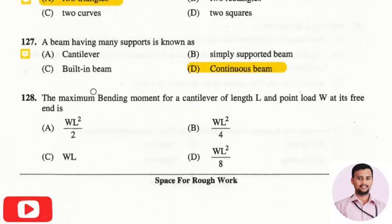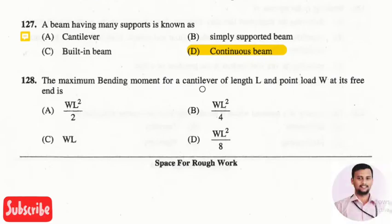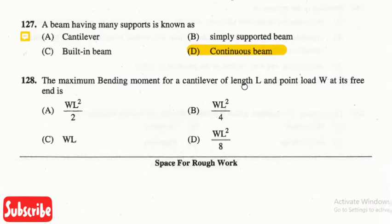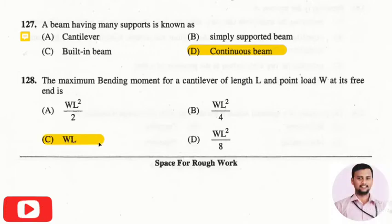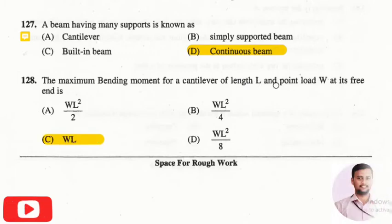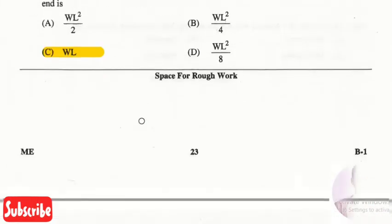The next question is: the maximum bending moment for a cantilever of length L and point load W at its free end is? The right answer is option three, that is W × L — the load W multiplied by the total length of the cantilever beam.